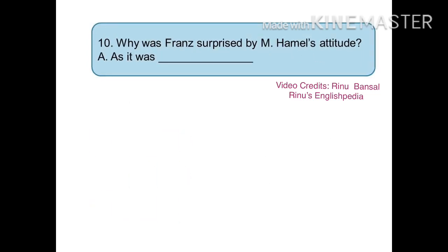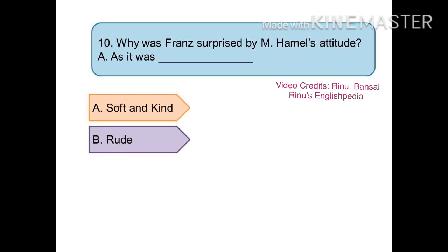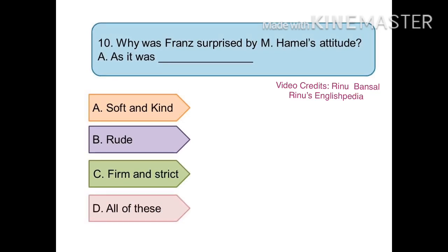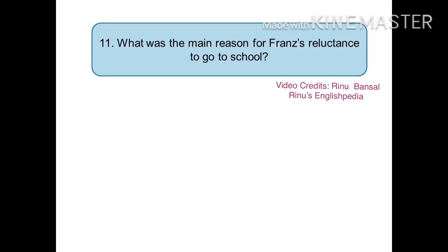The tenth question is: why was Franz surprised by Monsieur Hamel's attitude? The right answer is (a) Franz was surprised by Monsieur Hamel's attitude as he was being soft and kind. The eleventh question is: what was the main reason for Franz's reluctance to go to school? The options are: (a) he wanted to enjoy the warm sunlight, (b) he wanted to enjoy the drilling of the soldiers, (c) he wanted to enjoy the outdoors, or (d) he had not prepared the lesson of French participles.